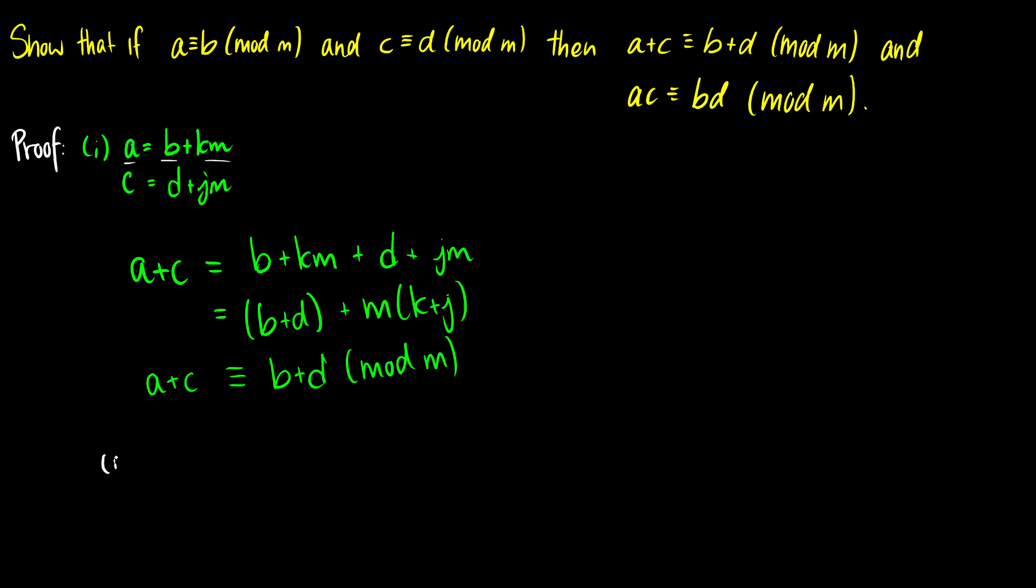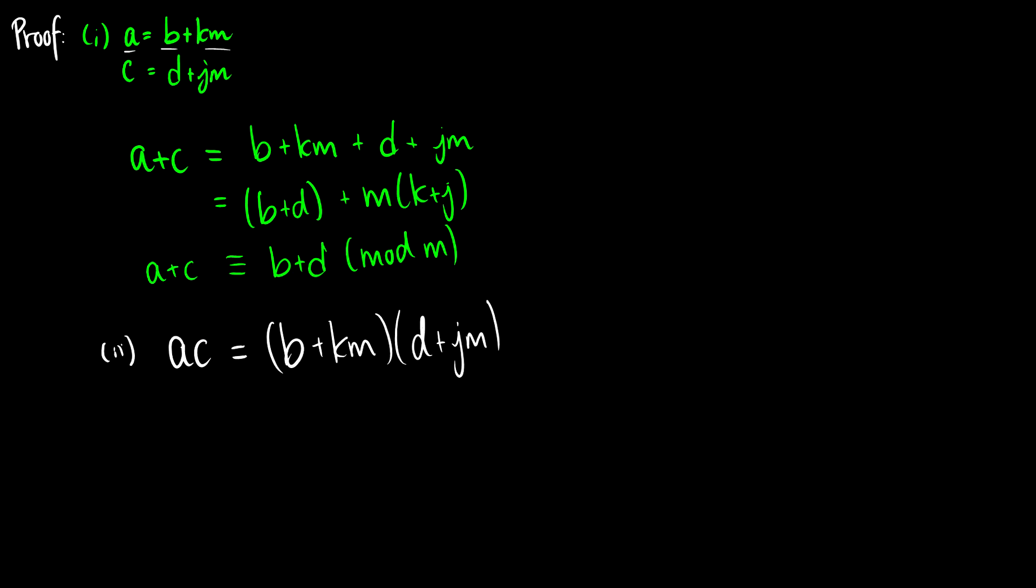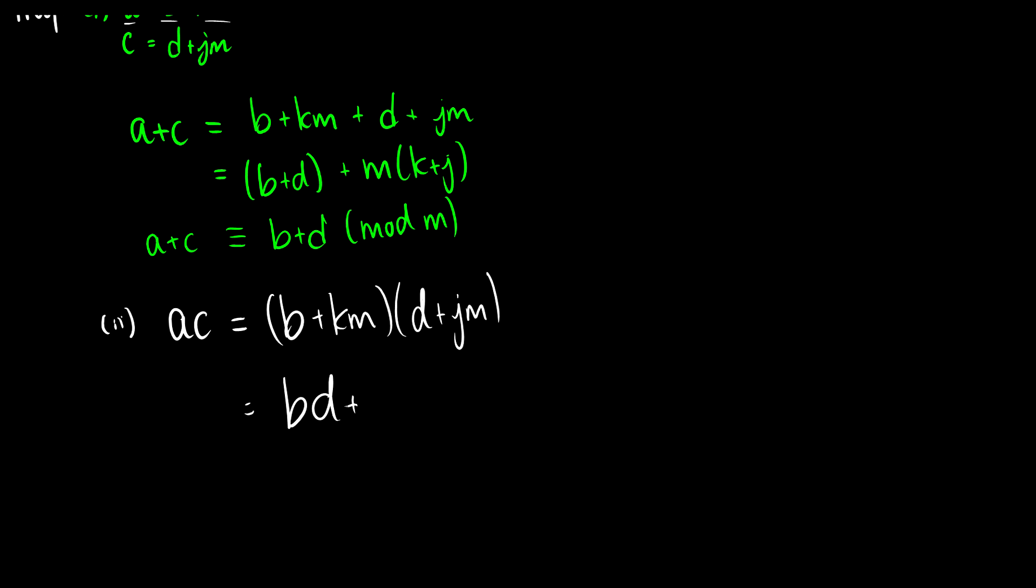Now let's do the proof of two. So we want to show that a times c is congruent to b times d mod m. So ac, well, this is just going to be b plus km times d plus jm. So let's multiply this out. We're going to get bd plus bjm plus kdm plus kjm squared. So let's factor out an m from everything if we can. It's going to be m times bj plus kd plus kjm. Oh, look, same thing we had before.